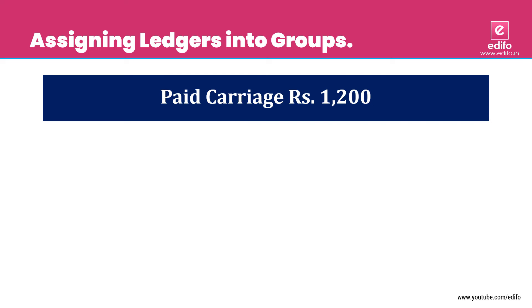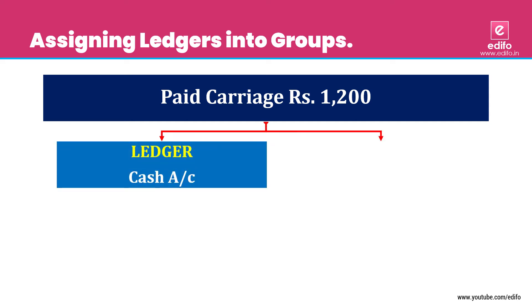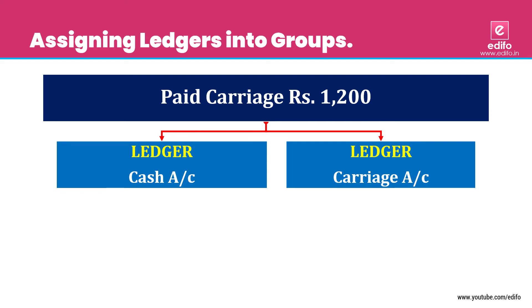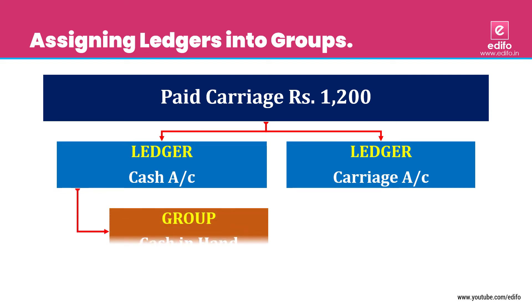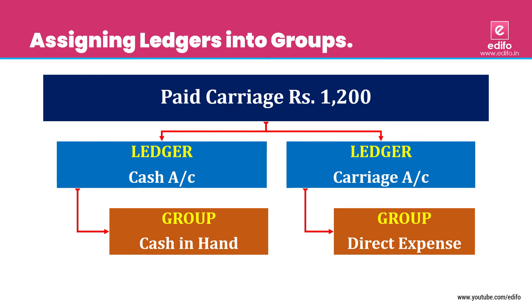Next transaction: paid carriage. The outflow aspect is cash, and the benefit is carriage. Two aspects: cash and carriage. Cash belongs to 'Cash in Hand' and carriage belongs to a group called 'Direct Expense'. So carriage account is under 'Direct Expense' group.